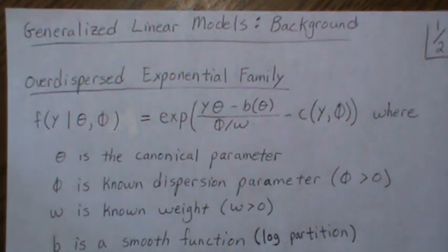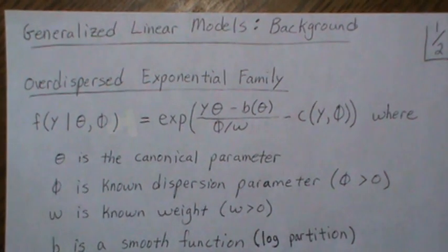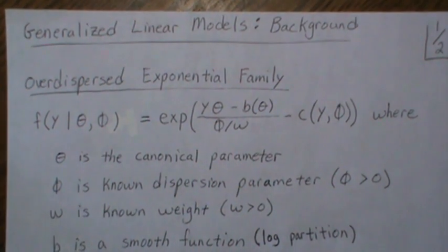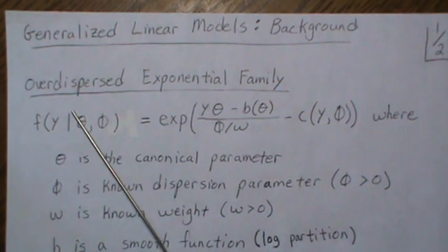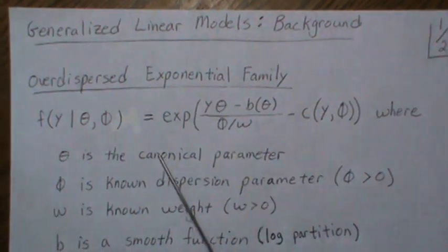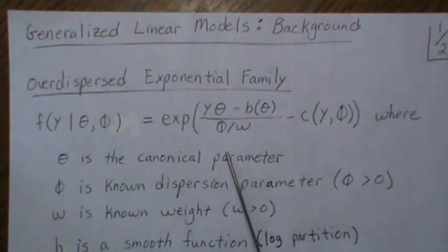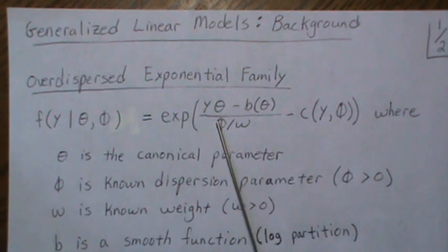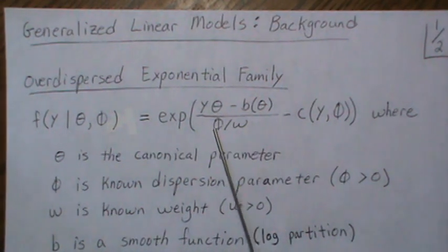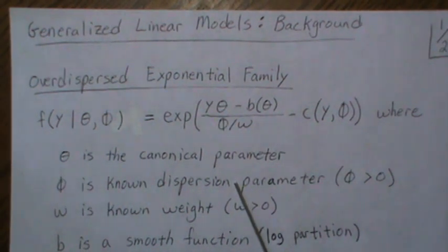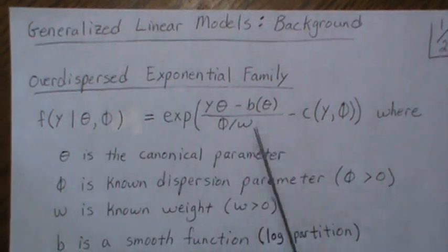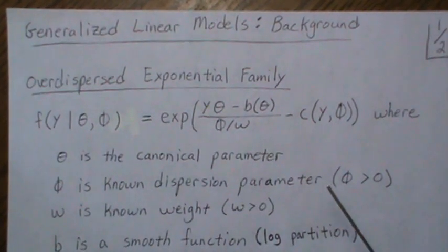The second video will cover the link function, and I think the third video will cover the likelihood function. So here we look at the over-dispersed exponential family, and really that involves this parameter phi — otherwise it would just be a part of the exponential family.